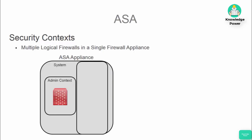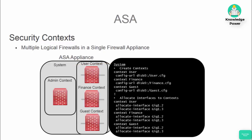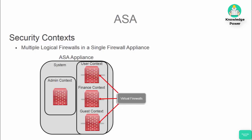Once in multi-context mode, there is a system configuration mode that is used to manage contexts and interface allocation. Once contexts have been created in system mode, you now have multiple virtual firewalls running on one physical appliance.